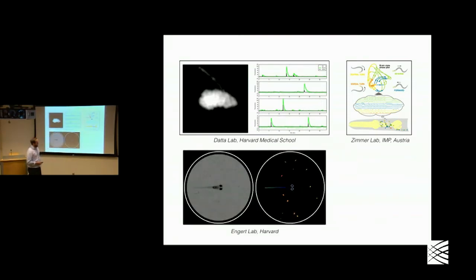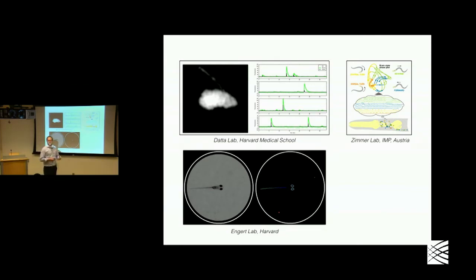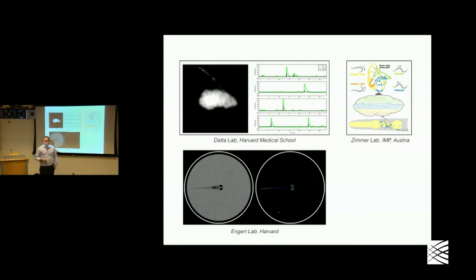Another collaboration I've been working on is with Florian Engert's lab at Harvard, where they're recording from zebrafish as they swim around in a tank. The zebrafish are free — not head-fixed. We can see the zebrafish attack and eat paramecia, which are its prey. We can quantify this behavior in great detail: identifying points along the tail, the eyes, and eye angles. When the fish is hunting prey, its eyes converge so it can focus its field of view on the prey. We can then ask how this behavior depends on what the fish sees or on its internal states.